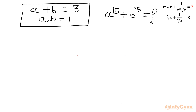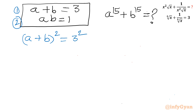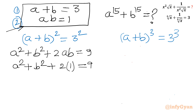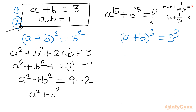I will consider squaring the first equation. (a + b)² = 3² gives a² + b² + 2ab = 9. Since ab = 1, we have a² + b² + 2(1) = 9, so a² + b² = 9 − 2 = 7.